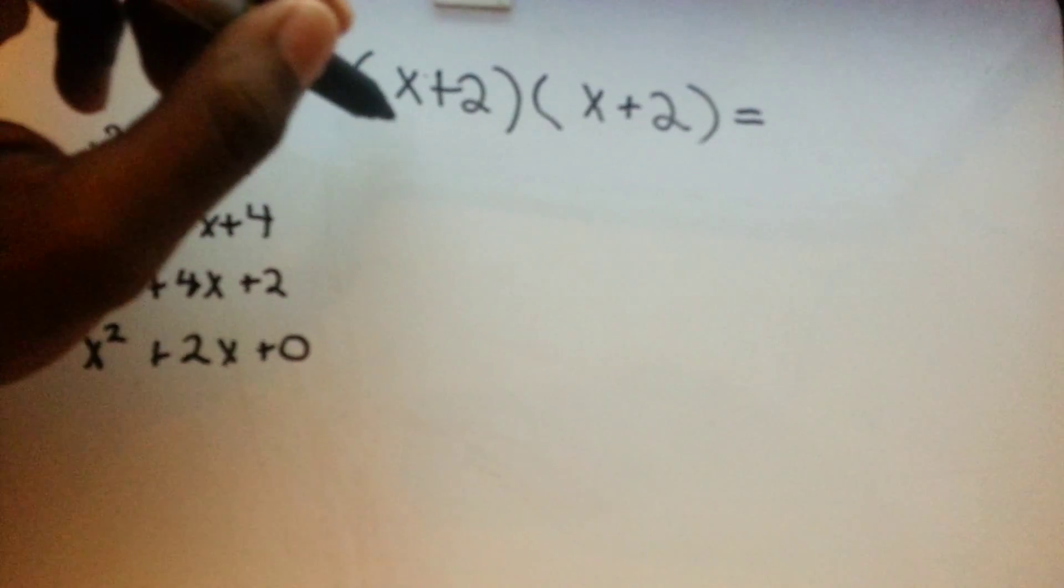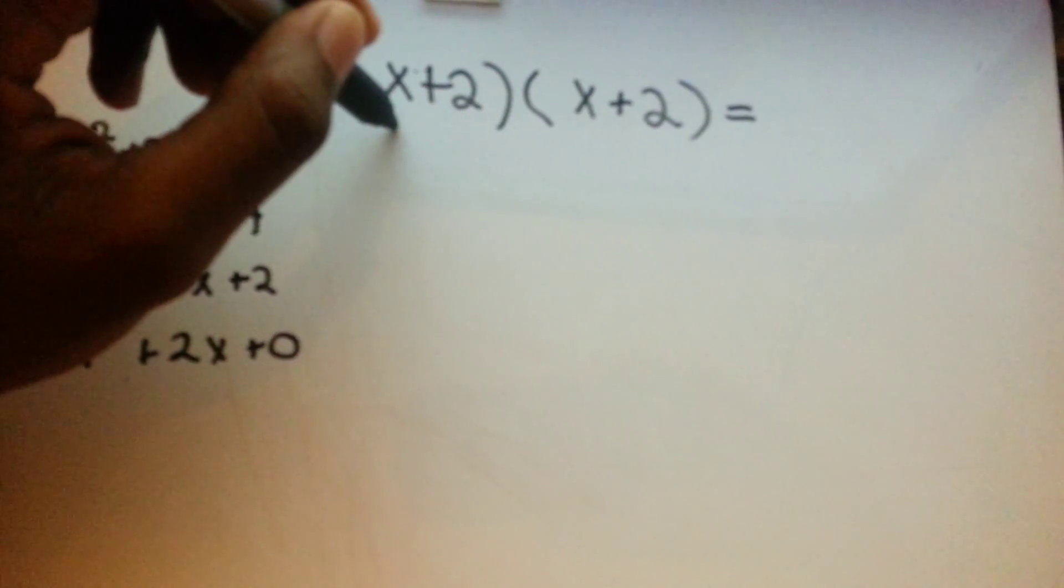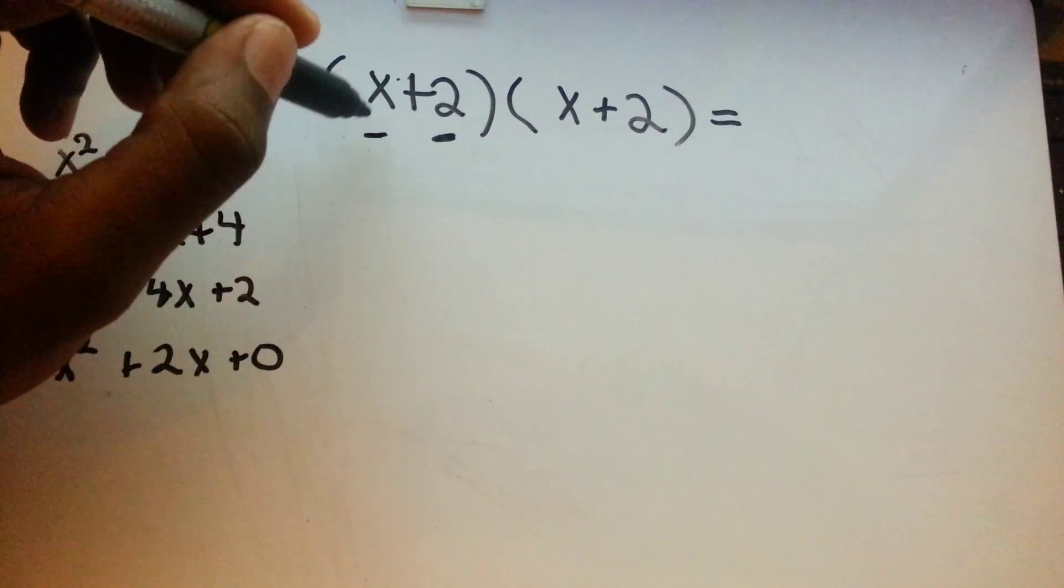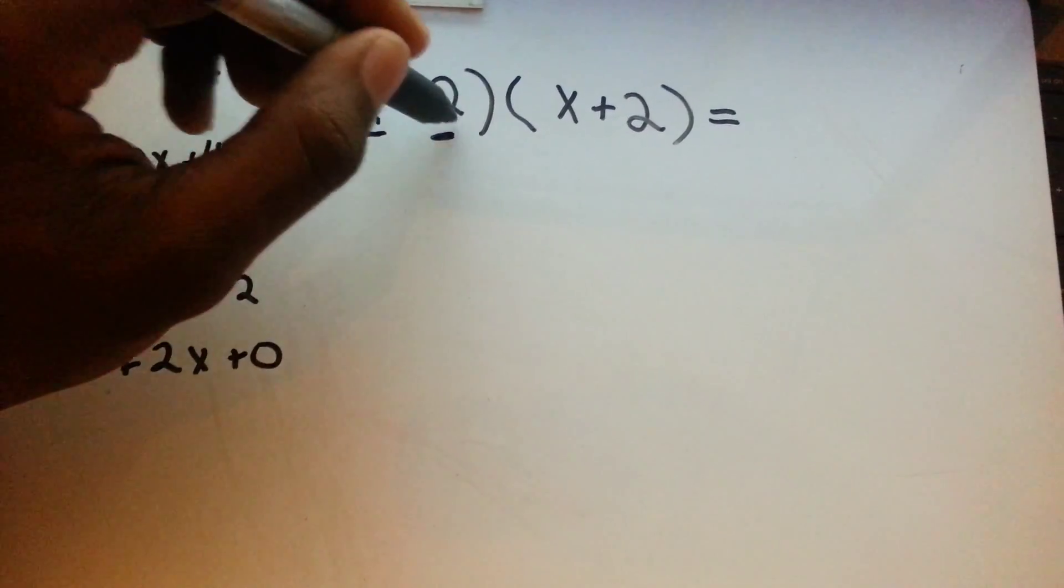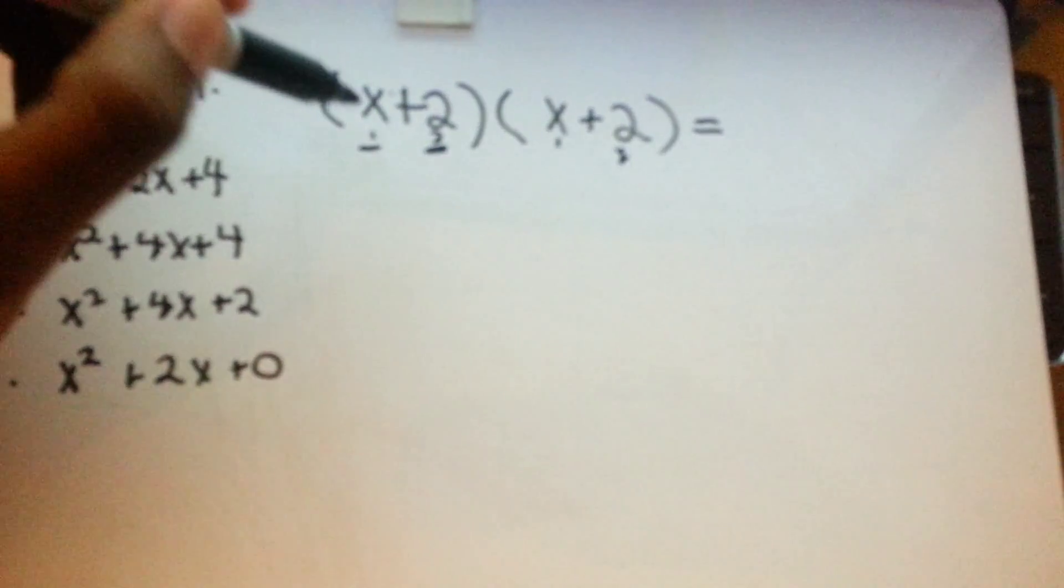It basically means multiplying two numbers. Bi means two, nominal meaning numbers. One number, two numbers.